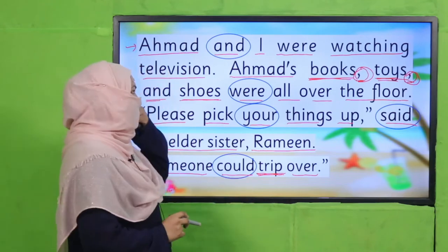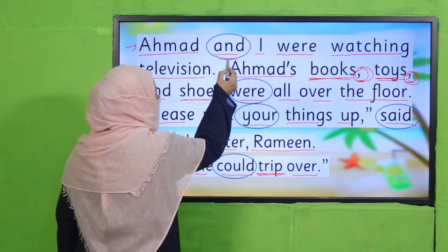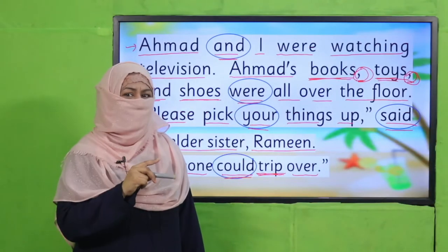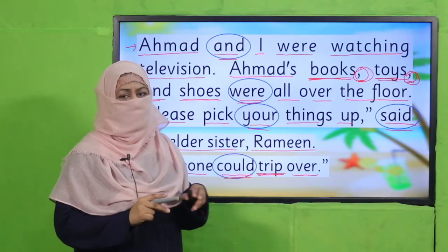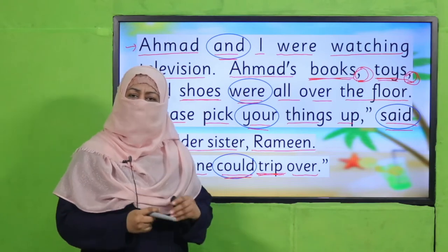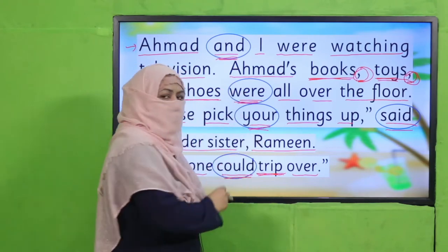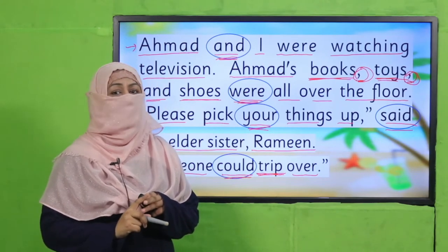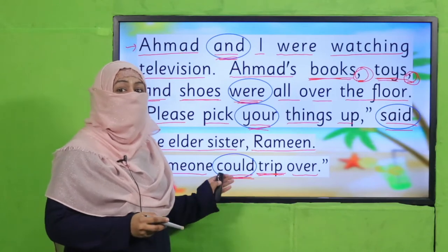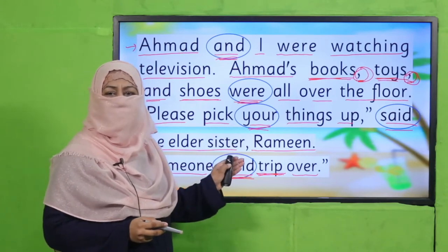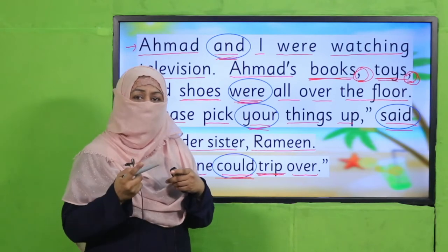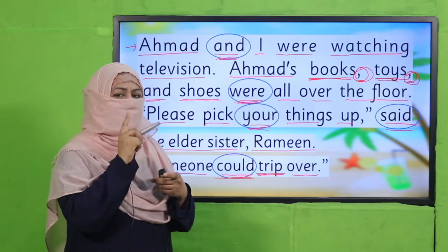Before going to the next sentence, I want you to notice why I have circled these words: 'and,' 'were,' 'you,' 'said,' 'could.' These are called sight words. Remember, we have learnt about them. Why do we call them sight words? There are two reasons. First, by looking at them we need not struggle to read them because we have read them so many times. Second, sight words are sometimes not easily decodable — we cannot sound them out letter by letter. Both types of words are known as sight words.